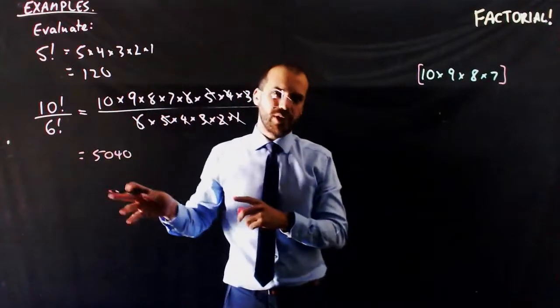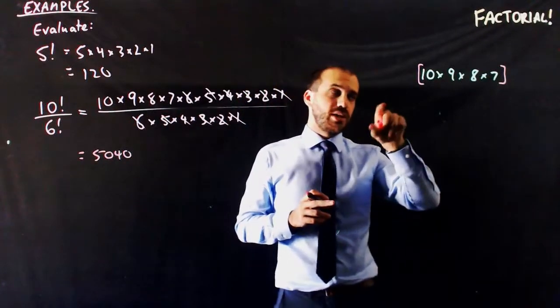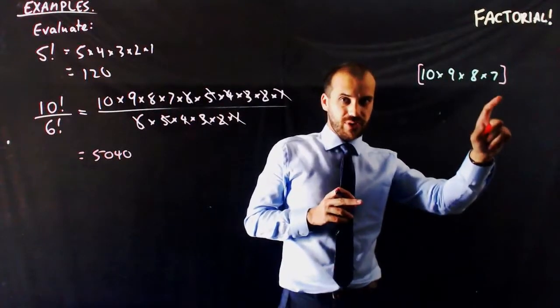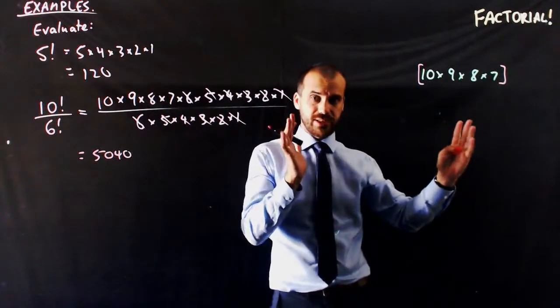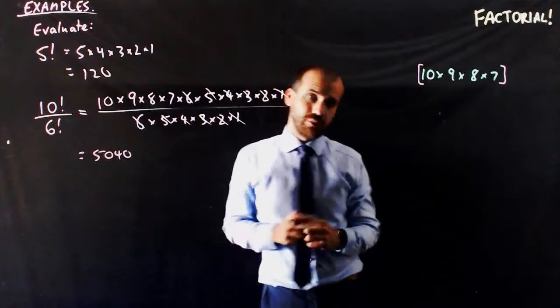And you might think, why bother? Maybe you've got to do 100 times 99 times 98 all the way down to times 7. If that's the case, typing all of that in is going to be a lot slower than typing something like that in.